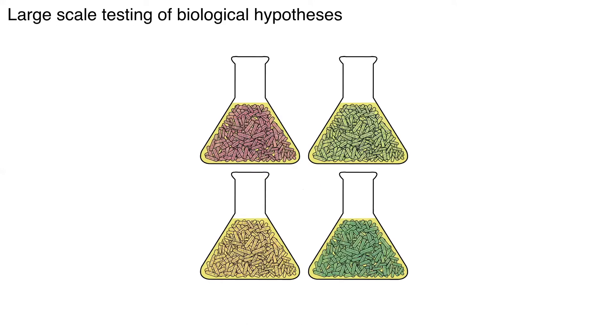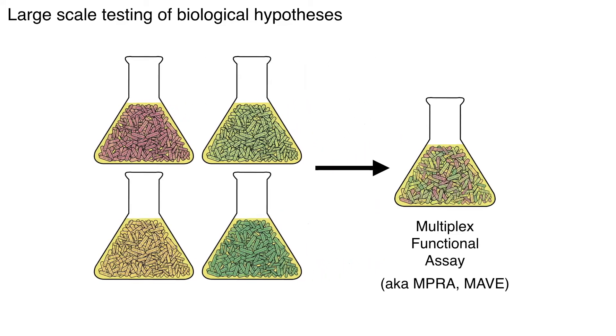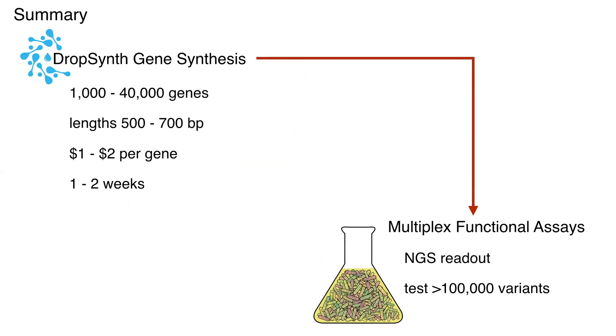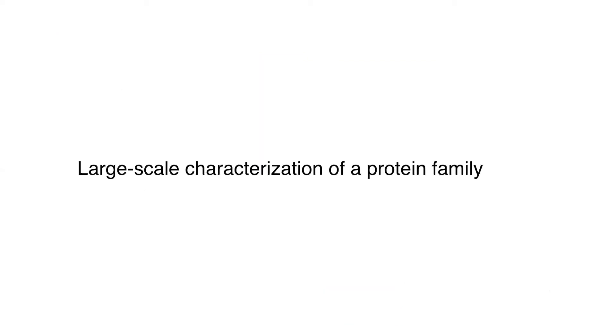And so classically we've always done a single hypothesis per test tube. Multiplexing has really allowed us to switch over to many hundreds of thousands of variants per test tube using barcodes to do NGS readouts. And so we're going to couple these libraries into these multiplex assays.